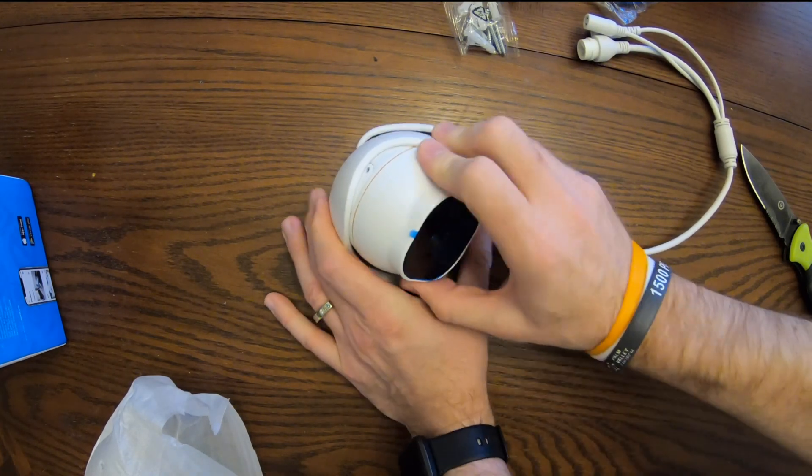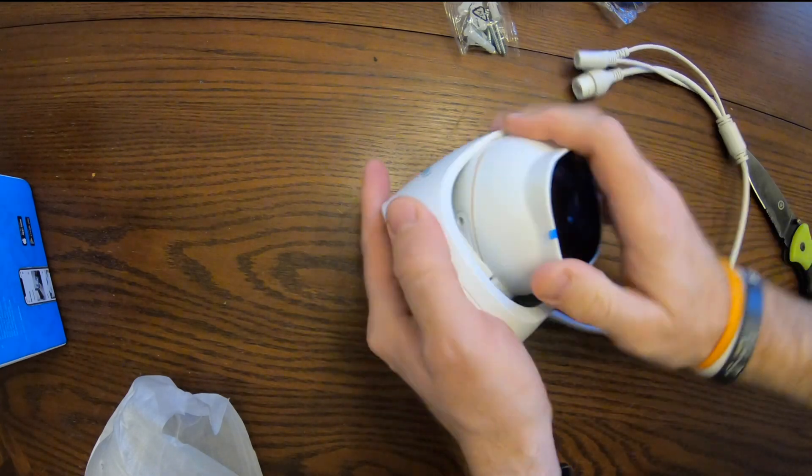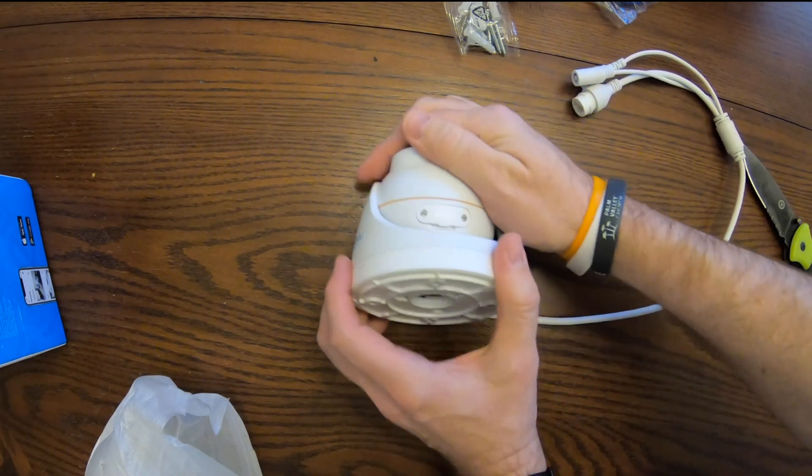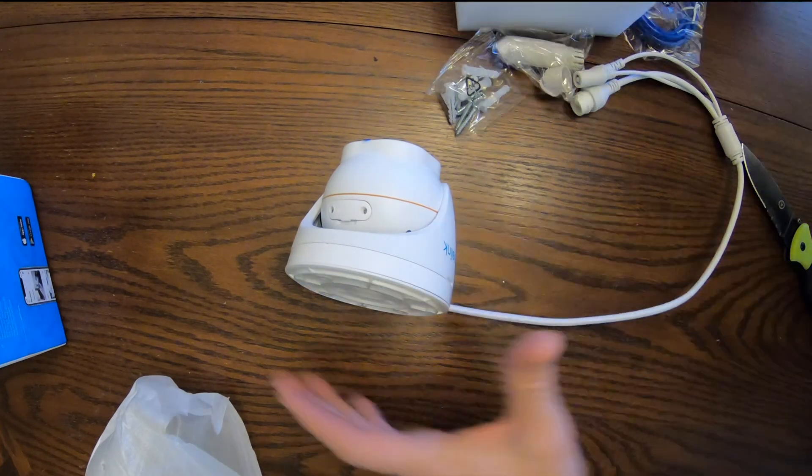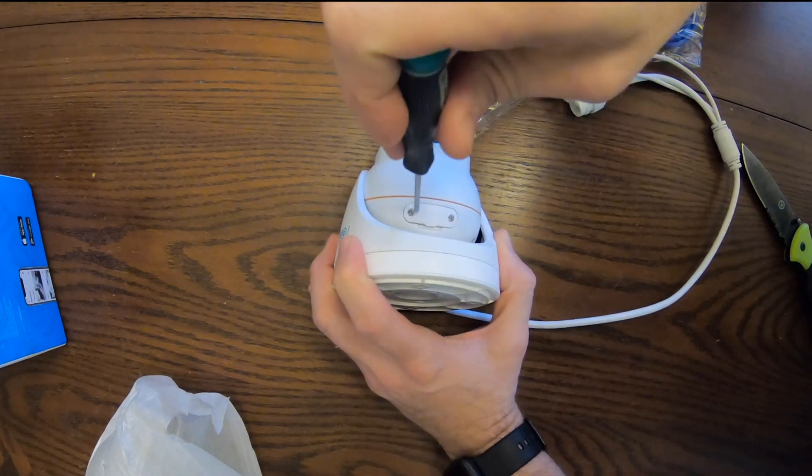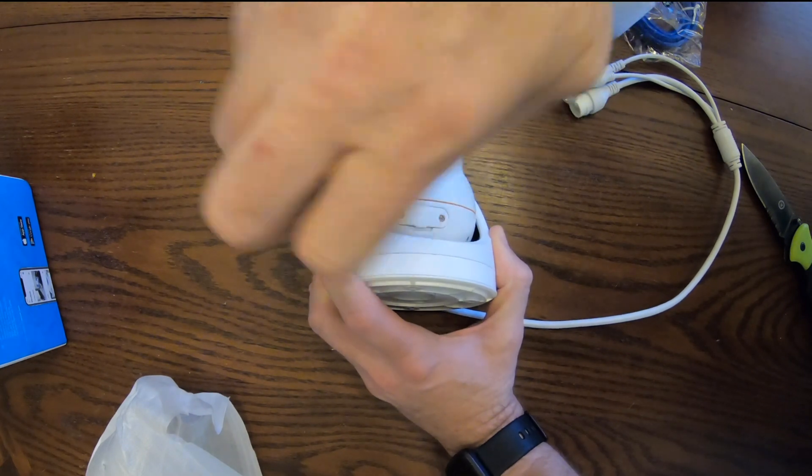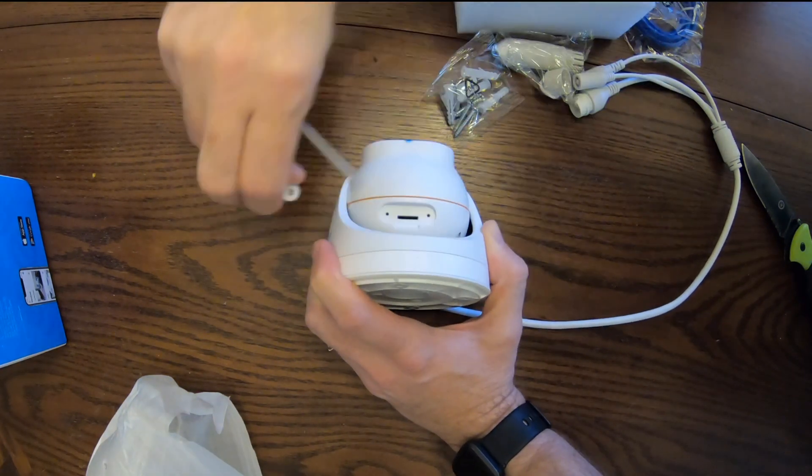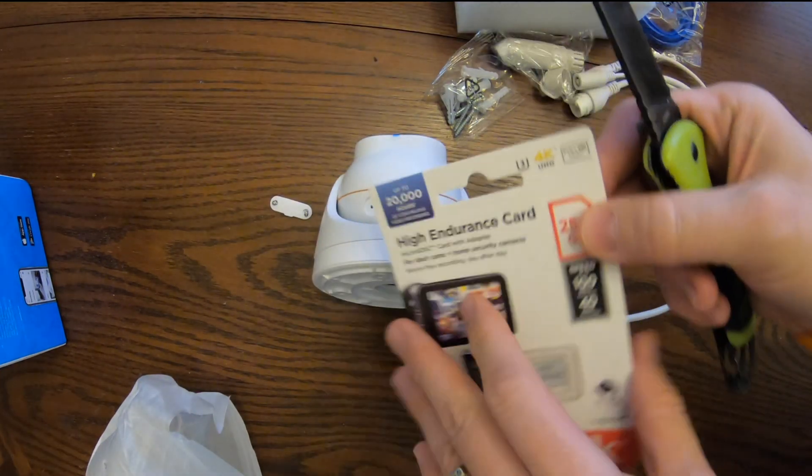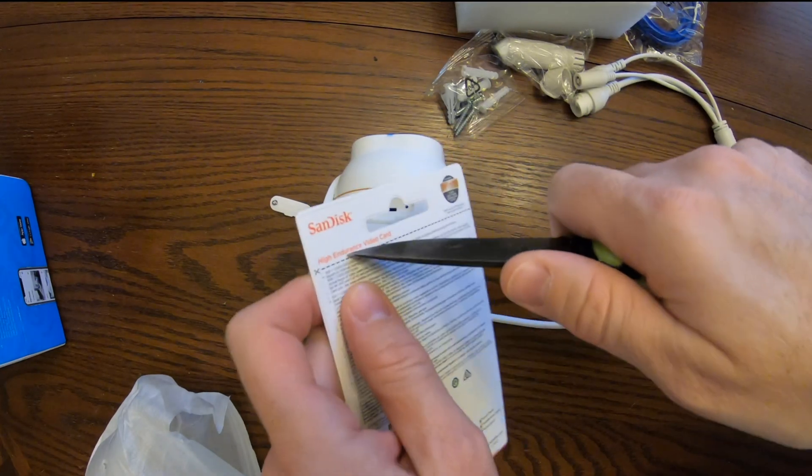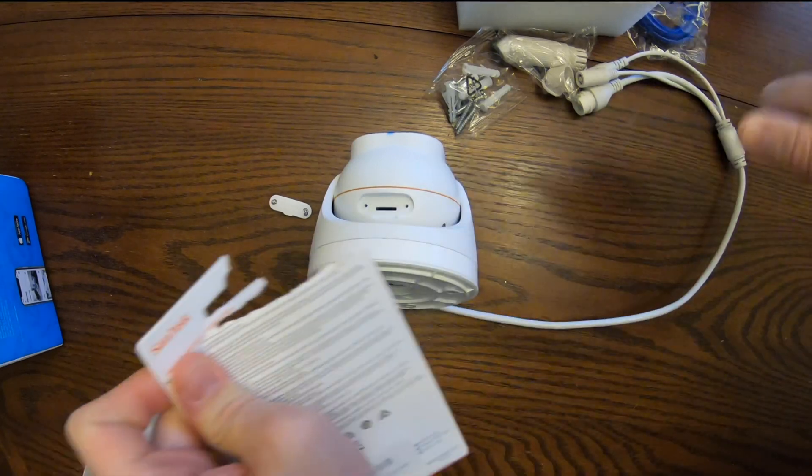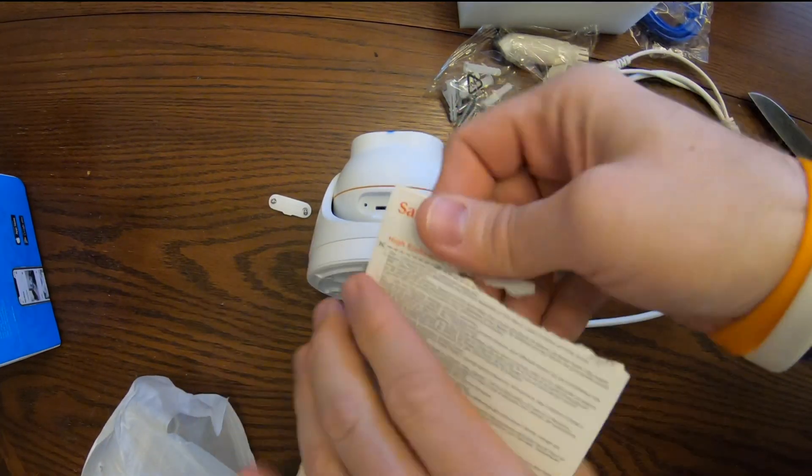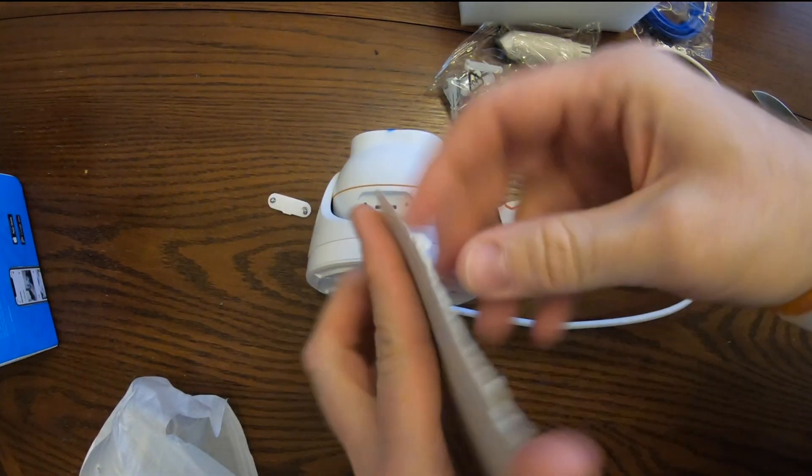There's this little plate that you remove to put in a microSD card for local storage. Alright, so we'll unscrew these and pull that out. Then we'll open up a high-endurance microSD card. Got to make sure you get the high-endurance ones, because it's always writing video to the card and keeps overriding itself as it gets filled.